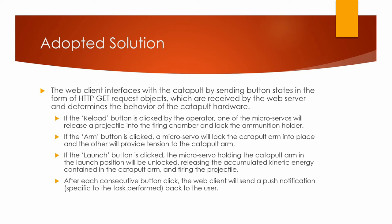If the launch button is clicked, the micro servo holding the catapult arm in the launch position will be unlocked, releasing the accumulated kinetic energy contained in the catapult arm and firing the projectile.